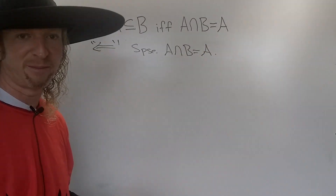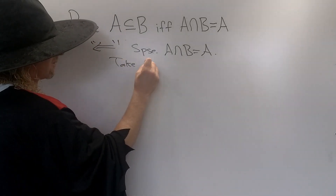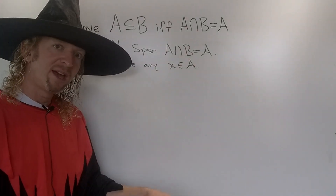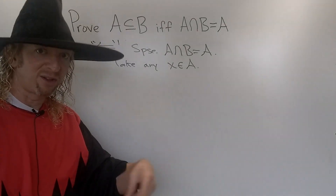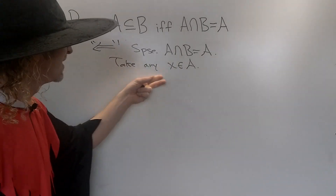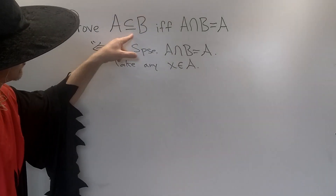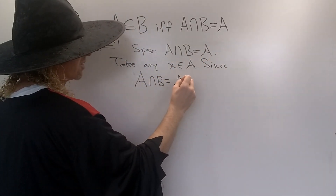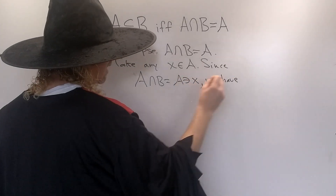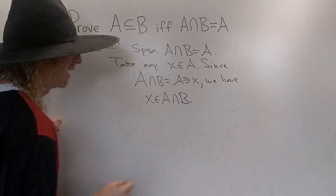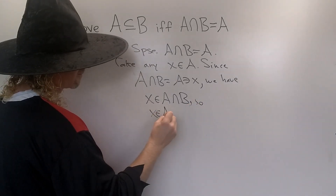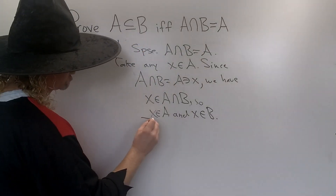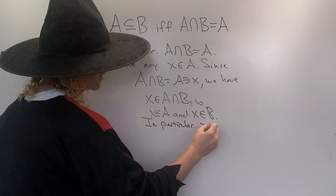We have to show that every element in A is also an element in B. Take any x in A — a more formal way would be to say 'suppose x in A is arbitrary,' but we'll use this to save time. Since A ∩ B = A and x is in A, it follows that x is also in A ∩ B. And since x is in the intersection, that means x is in A and x is in B — in particular, x is in B, which is what we want.